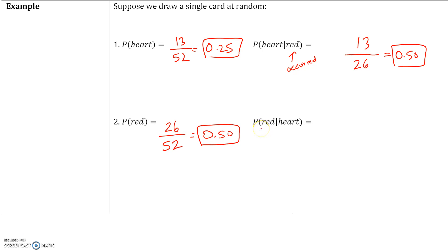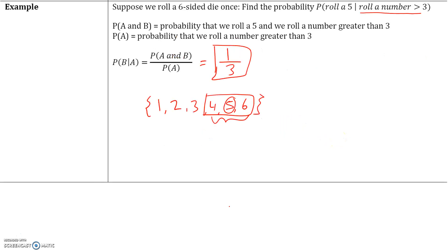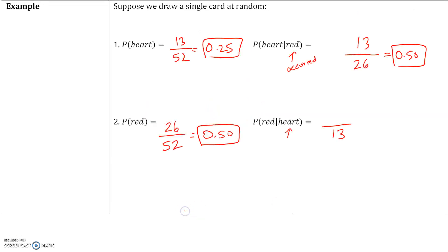Now let's go the other way. What is the probability that we drew a red card given that we already drew a heart? We already drew a heart, and there are 13 hearts in the deck. Whatever the condition is goes in the denominator — the event that has already occurred goes in the denominator. So we have 13 hearts as the denominator. Now, how many hearts are red? Every heart is red, so 13 out of 13 equals 1, or 100%. Logically, if the card we drew is a heart, it must be red.